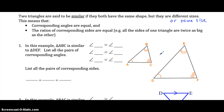For instance, if this side is twice as big as this side, then this side would be twice as big as this side, and this side would be twice as big as that side. That's what it means by the ratios of corresponding sides are equal.